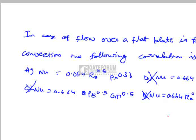The correct option is A, where the Nusselt number is expressed as a function of the Reynolds number and Prandtl number: Nu = 0.664 × Re^0.5 × Pr^0.33.